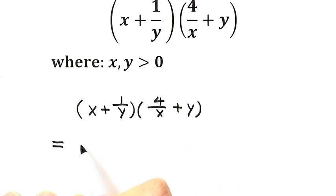x times this term is 4, then plus xy. Next, 4 over xy. Then the last term is 1.